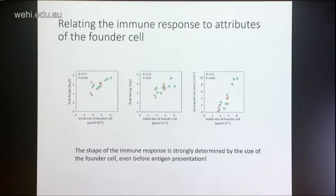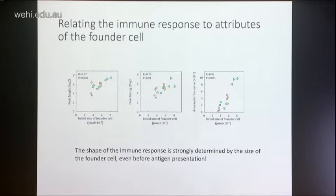We've been using that to try to get an understanding of whether you can actually predict that kind of immune response by looking at characteristics early in the cell. We've also been able to measure all kinds of characteristics of the founder cell. If you measure the size of the founder cell right at the beginning, before it's even met its antigen-presenting cell, it shows remarkable correlation with the peak height, the peak timing, and the area under the curve — particularly the area under the curve, which is probably the overall quality of the immune response. This was very surprising to us — that you already have determined so much about the immune response before you've even met an antigen-presenting cell.